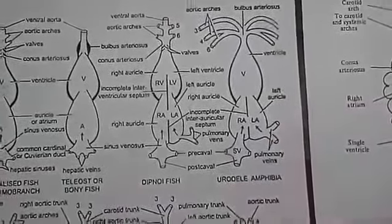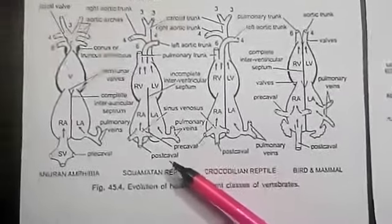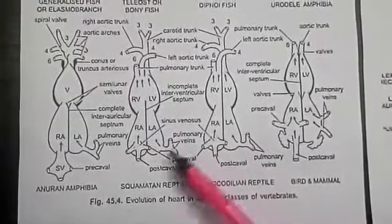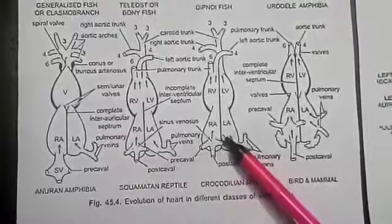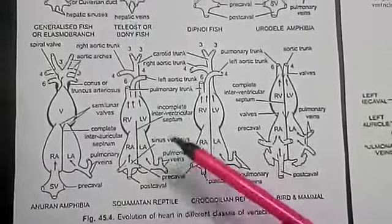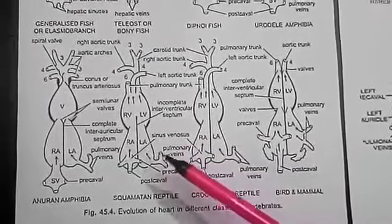In reptiles, the heart is further advanced though it shows transition stage between three-chambered heart and four-chambered heart. The atrium is always completely separated into right and left chambers.